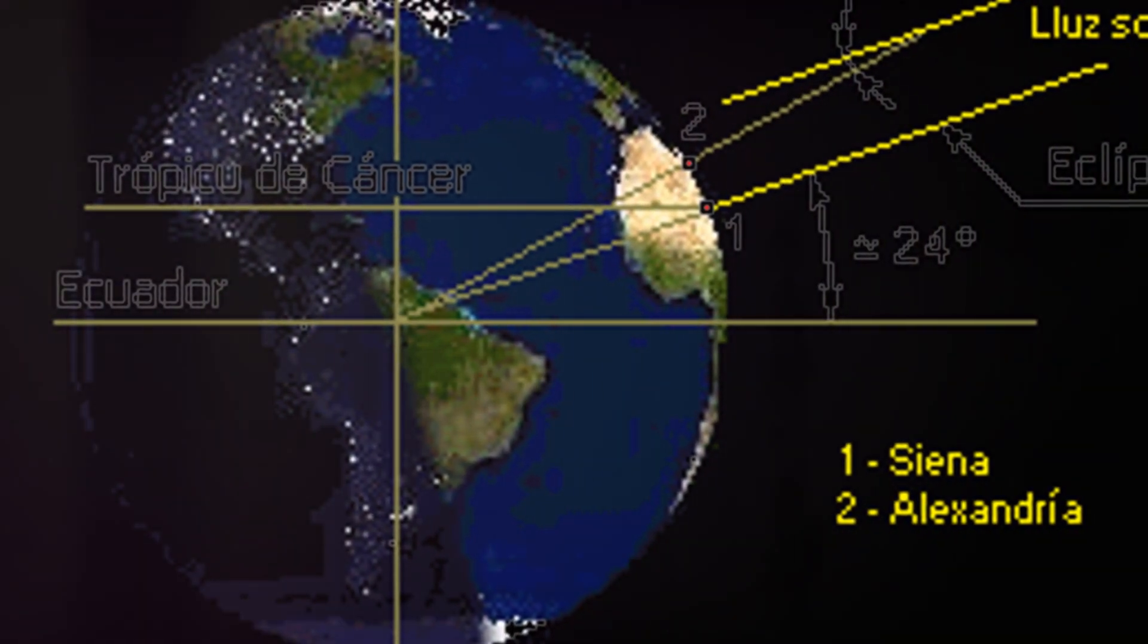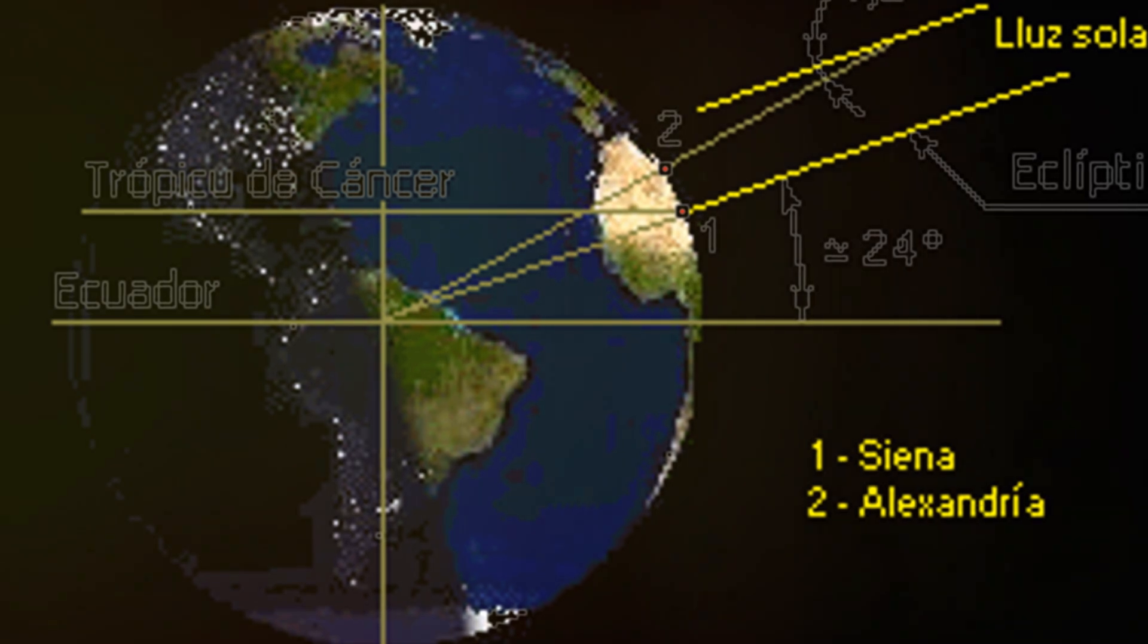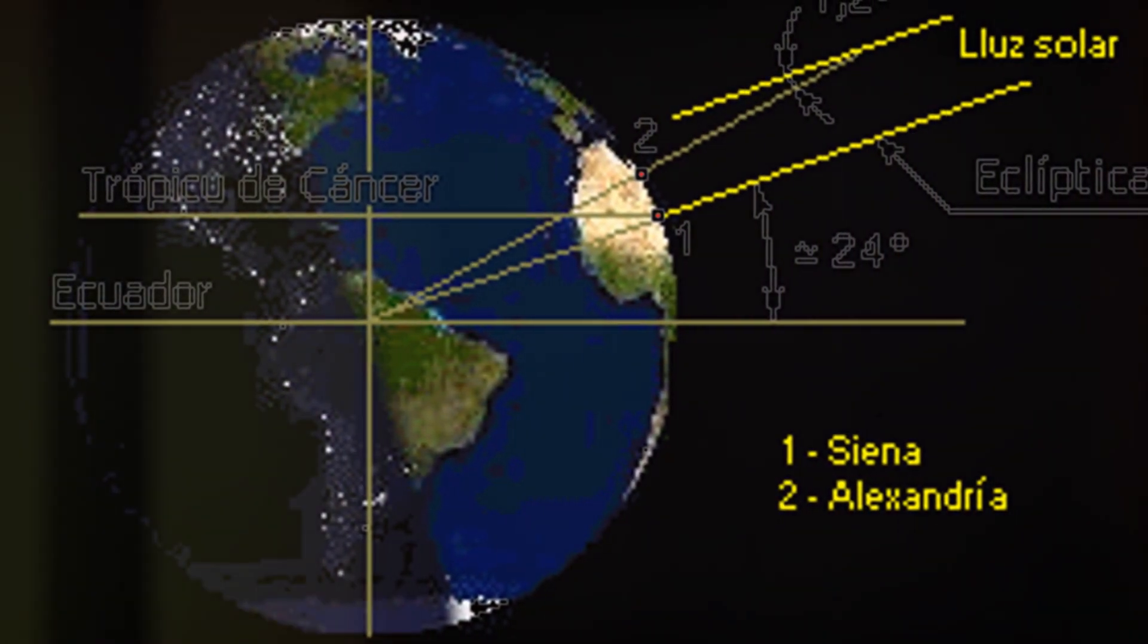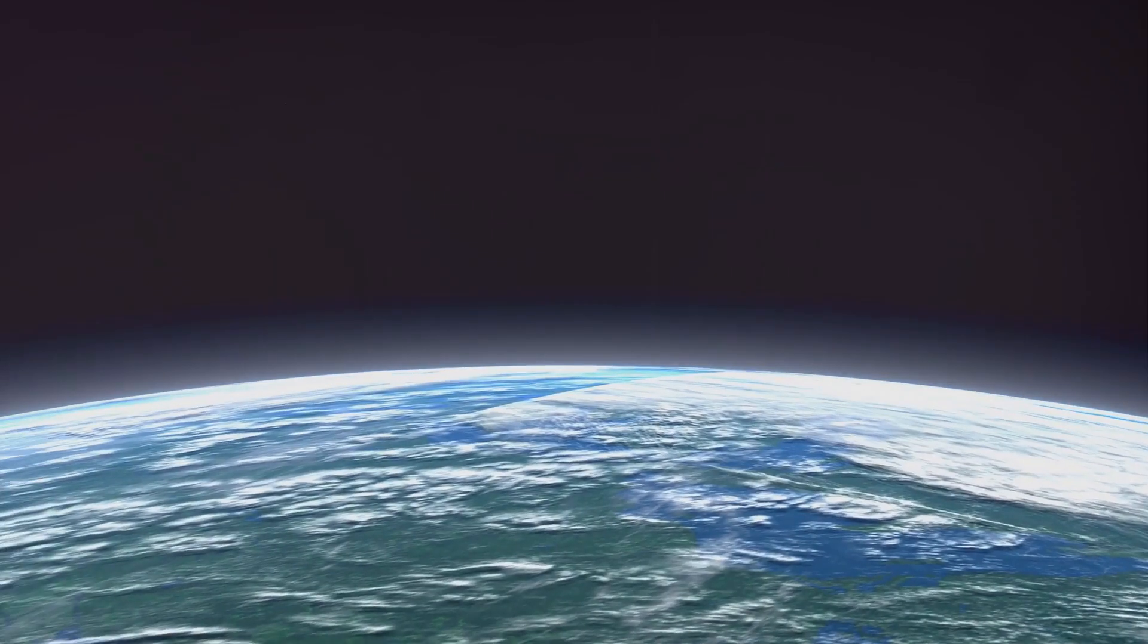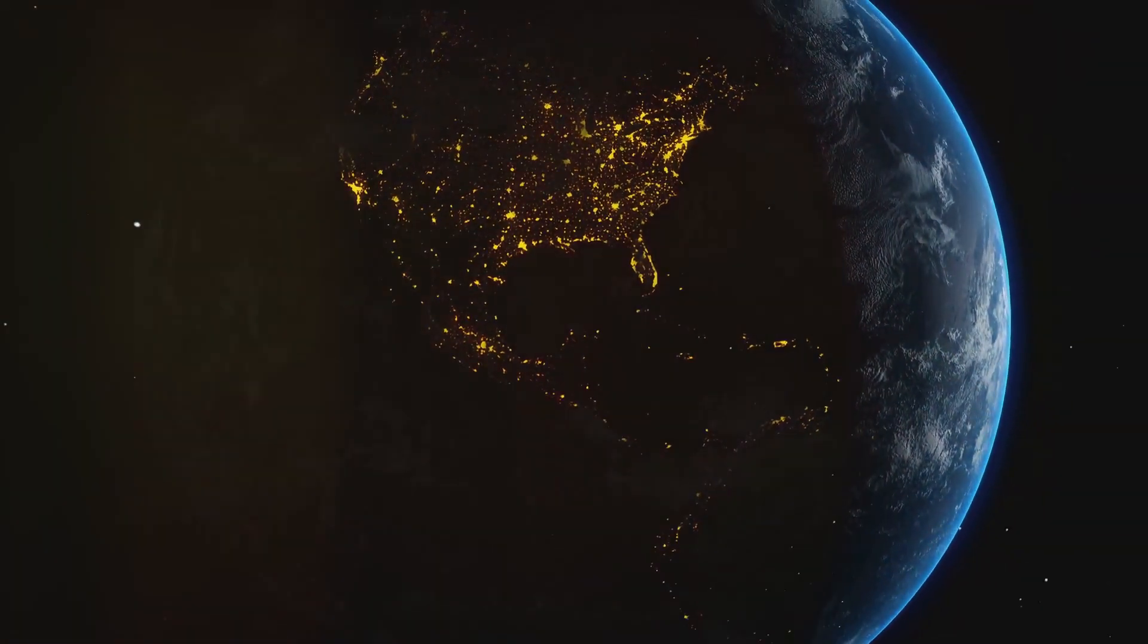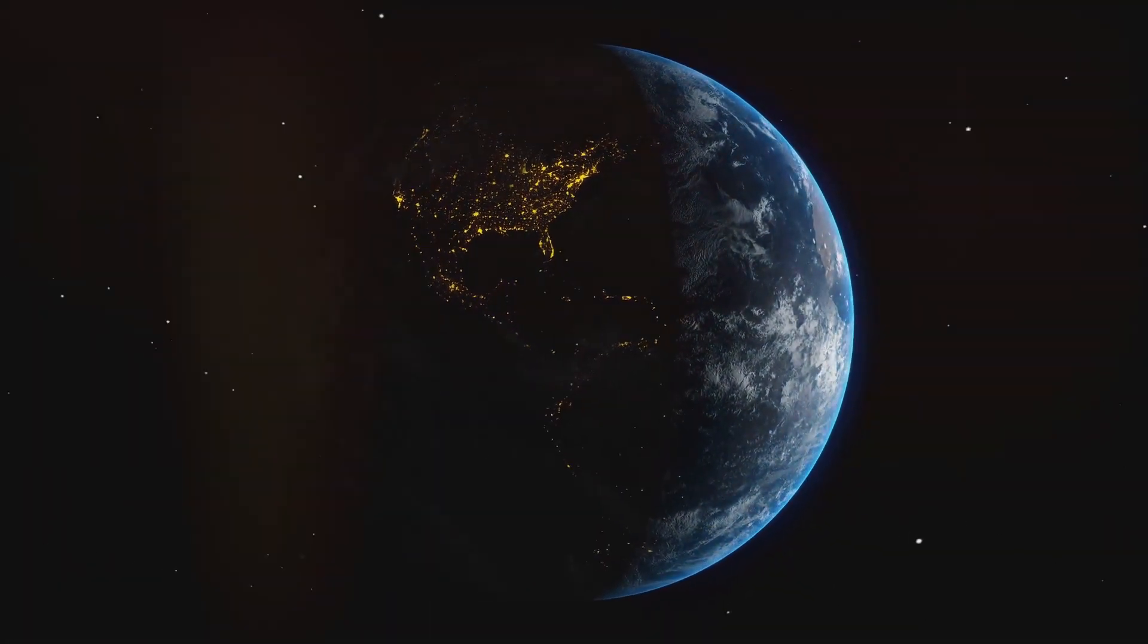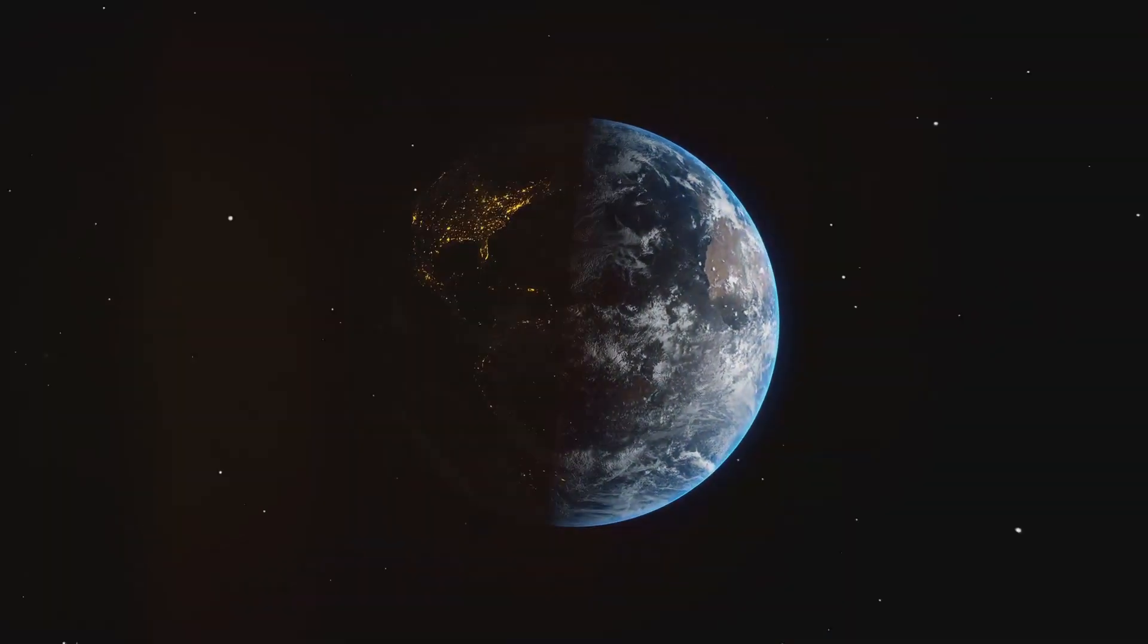He famously estimated the Earth's circumference using a strategic method involving shadows and geometry, a method that to this day still fascinates scientists and scholars alike. His innovative approach ushered in a new era of understanding about our world.